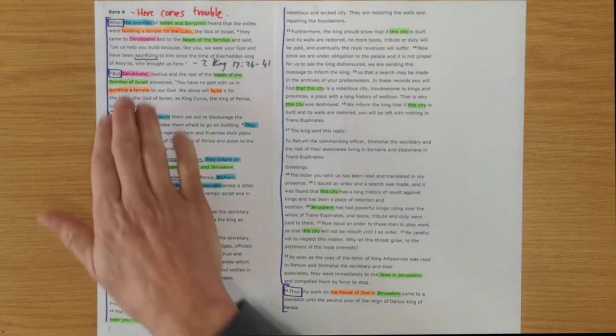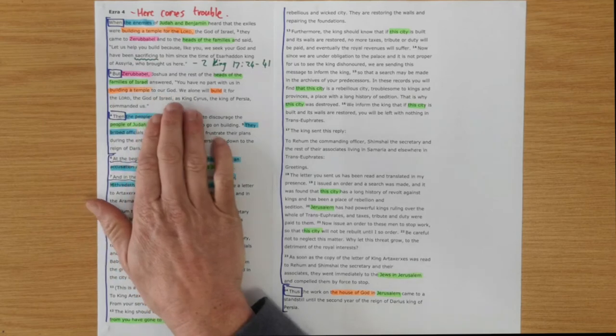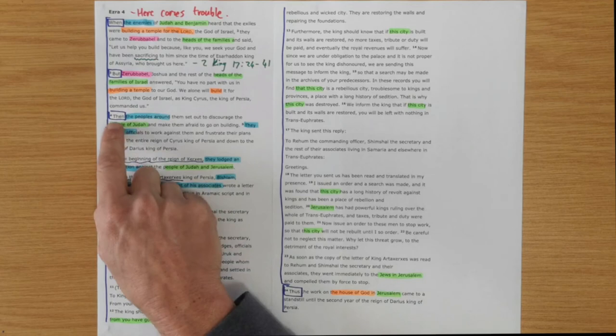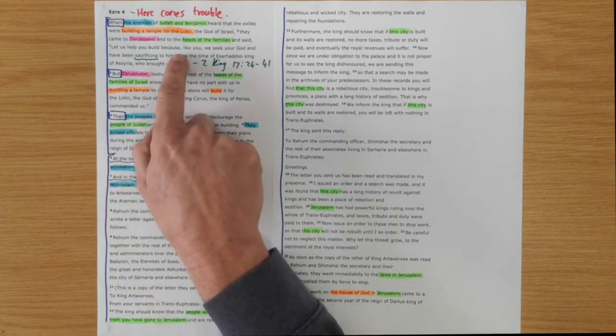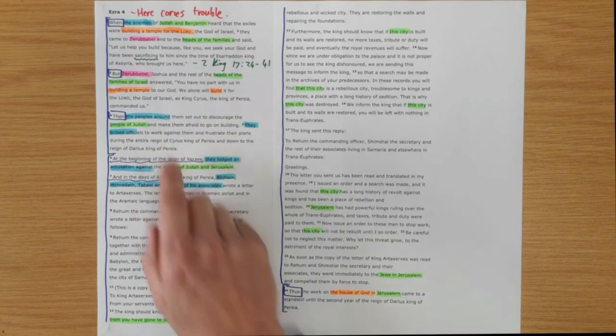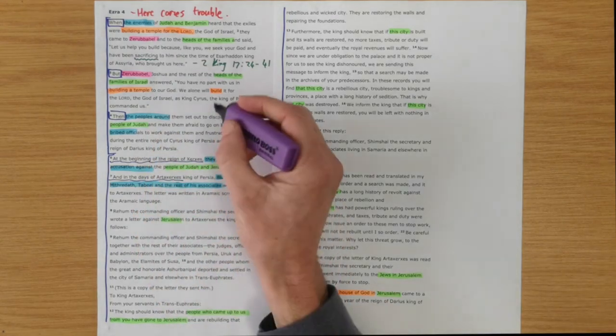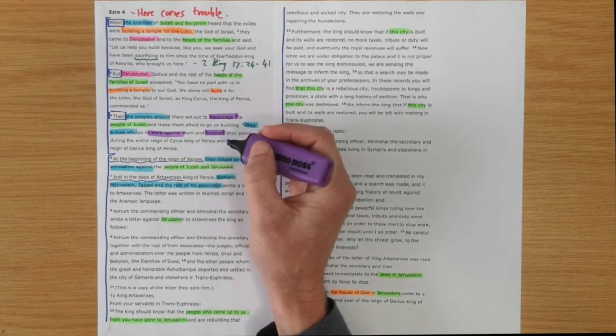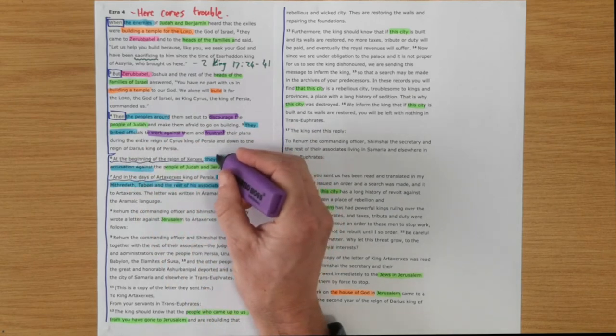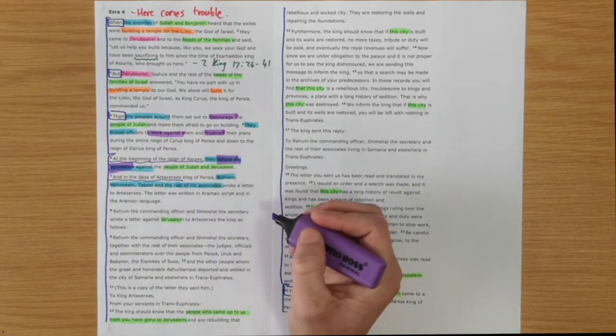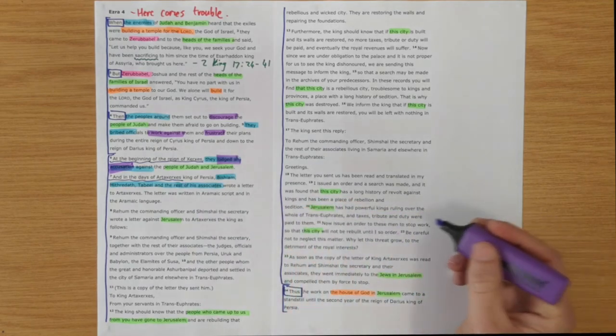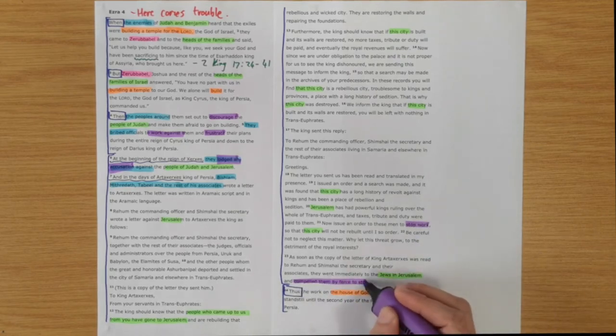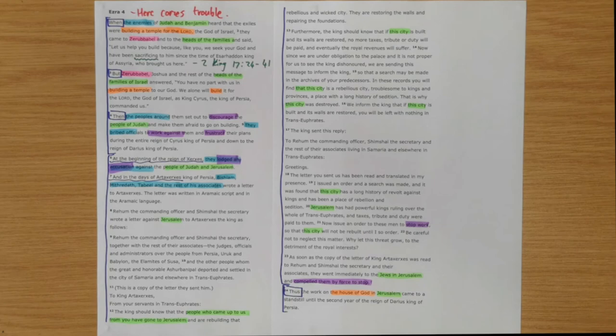Zerubbabel and his associates say, 'Nope, this is our work alone. We alone will build it.' Then we've got this transition: 'Then these helpers will help you.' All of a sudden, the mask comes off, and they start making trouble. They are discouraging and working against and frustrating. Then, when we get this flash forward, we see that they are lodging accusations. In this case, they stopped the work and they compelled them by force to stop.